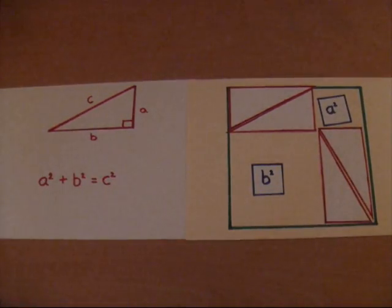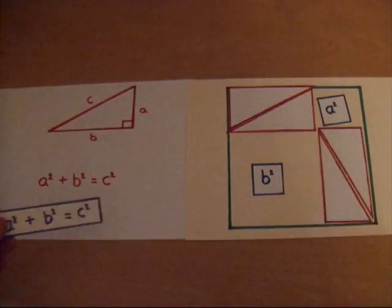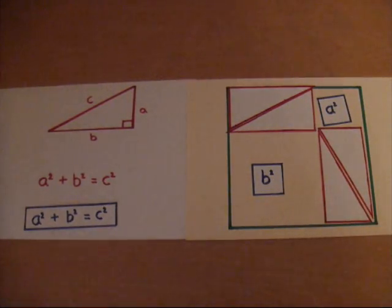Now, since these all fit inside the same green square, I've shown that the shaded regions have the same area. In other words, a squared plus b squared equals c squared.